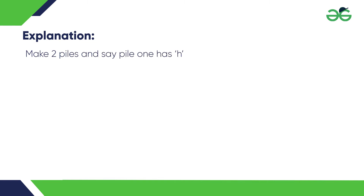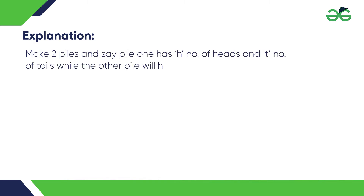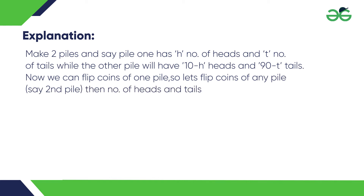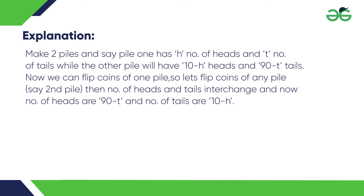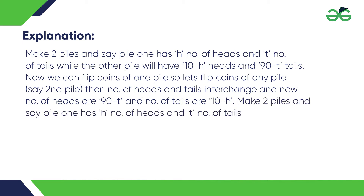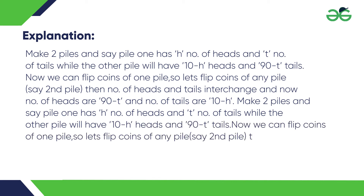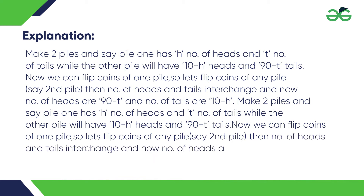Explanation: make two piles and say pile 1 has H number of heads and T number of tails, while the other pile will have 10 minus H heads and 90 minus T tails. Now, we can flip coins of one pile — say the second pile. Then the number of heads and tails interchange, and now the number of heads in pile 2 is 90 minus T and the number of tails is 10 minus H.